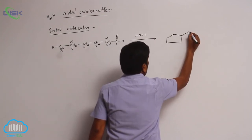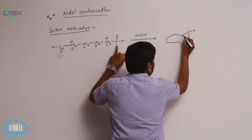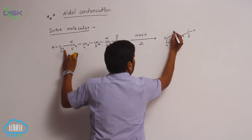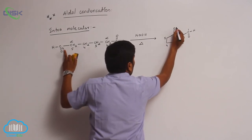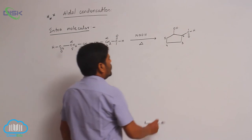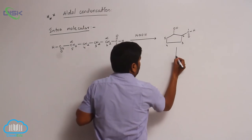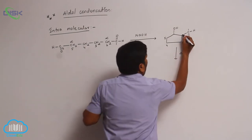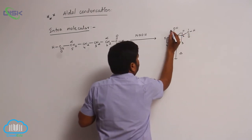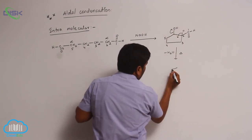The product has an aldehyde group. Numbering the carbons: this is the first carbon, second, third, fourth, fifth, and the sixth one. So here there is an OH group. Then, on heating, hydrogen is eliminated from the alpha carbon, then the beta hydrogen. Loss of water molecule takes place to form the final product.